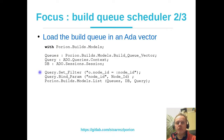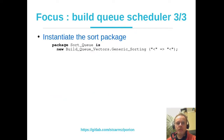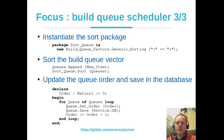We define a comparison function between two queue entries to decide whether the left element must execute before the right element. With that comparison function, we instantiate the generic sorting package, giving us the SortQueue package. We then append the new receipt to the current list and call the sort procedure. The result is a list sorted in build execution order. We iterate over it, set the order member in the database, and save each entry.